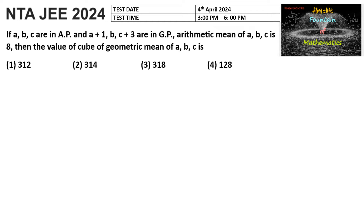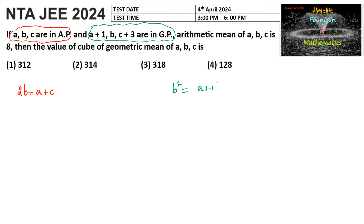If a, b, c are in arithmetic progression, we can write 2b is equal to a plus c as per the condition. And a plus 1, b, c plus 3 are in geometric progression, so we can write b squared is equal to (a plus 1) into (c plus 3), since if a, b, c are in GP then b squared is equal to ac.